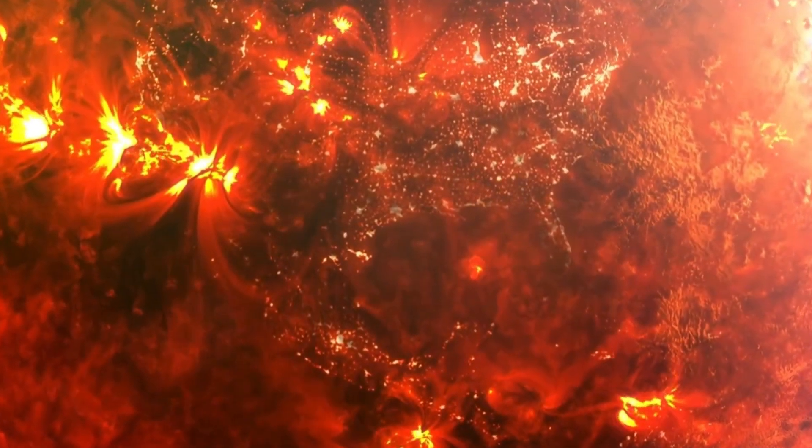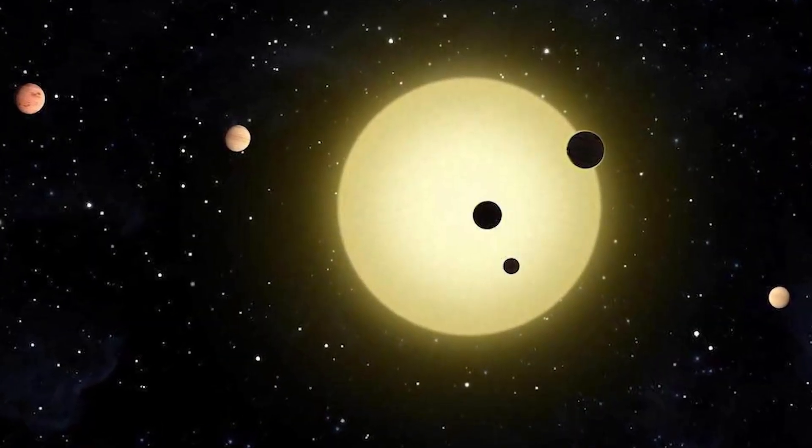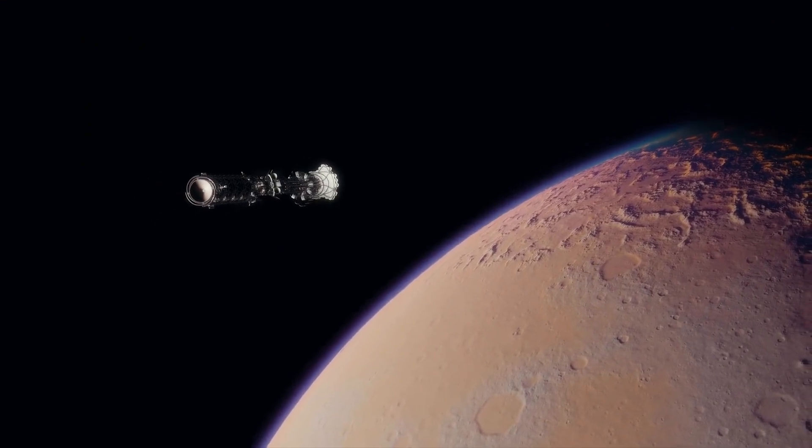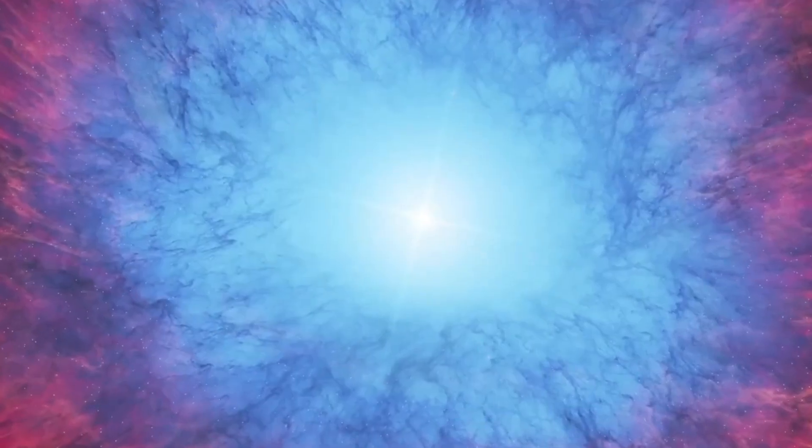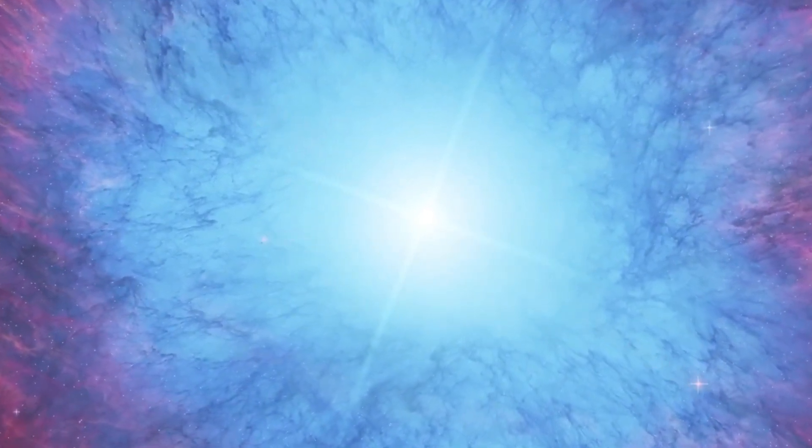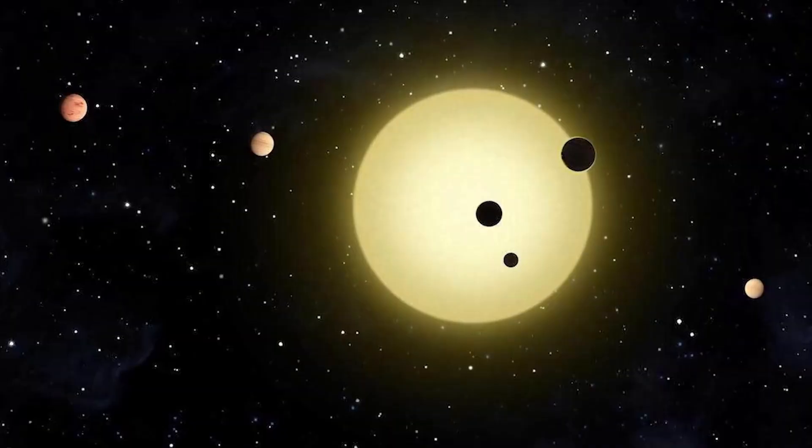During the sun's expansion, Earth's surface could also endure extreme heating, potentially turning into a scorched, lava-covered landscape before the sun shrinks into a white dwarf. As the sun sheds its outer layers and transitions into this final stage, it will leave behind a white dwarf surrounded by a glowing planetary nebula.